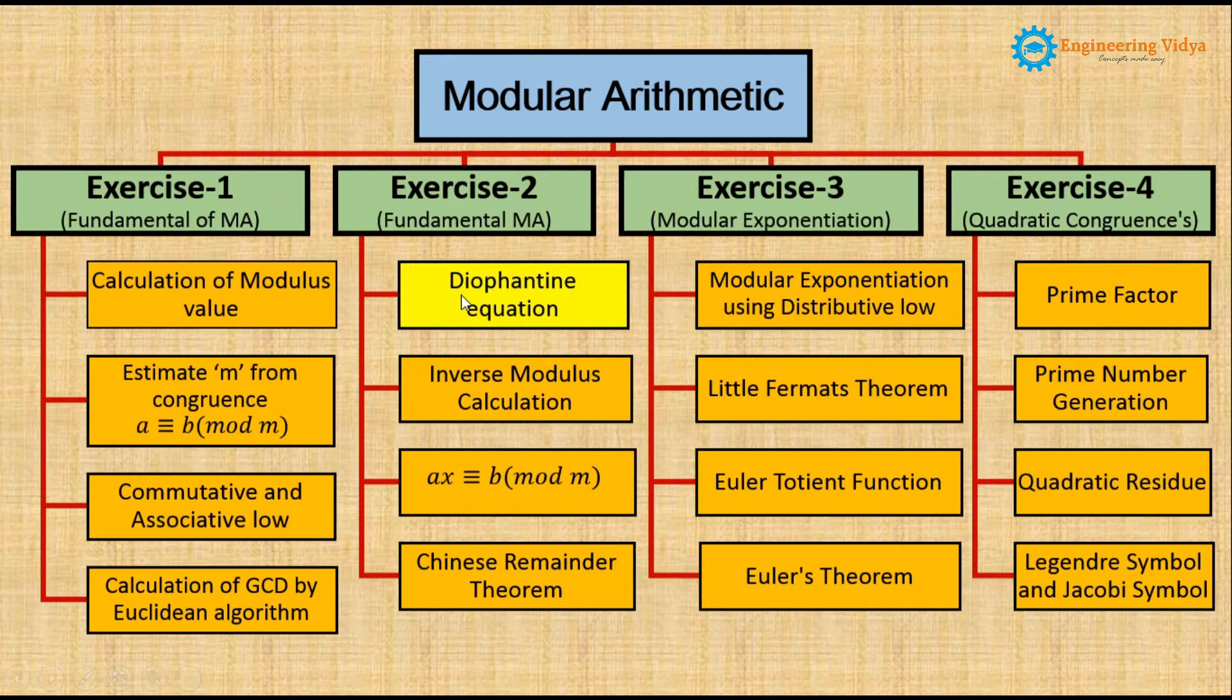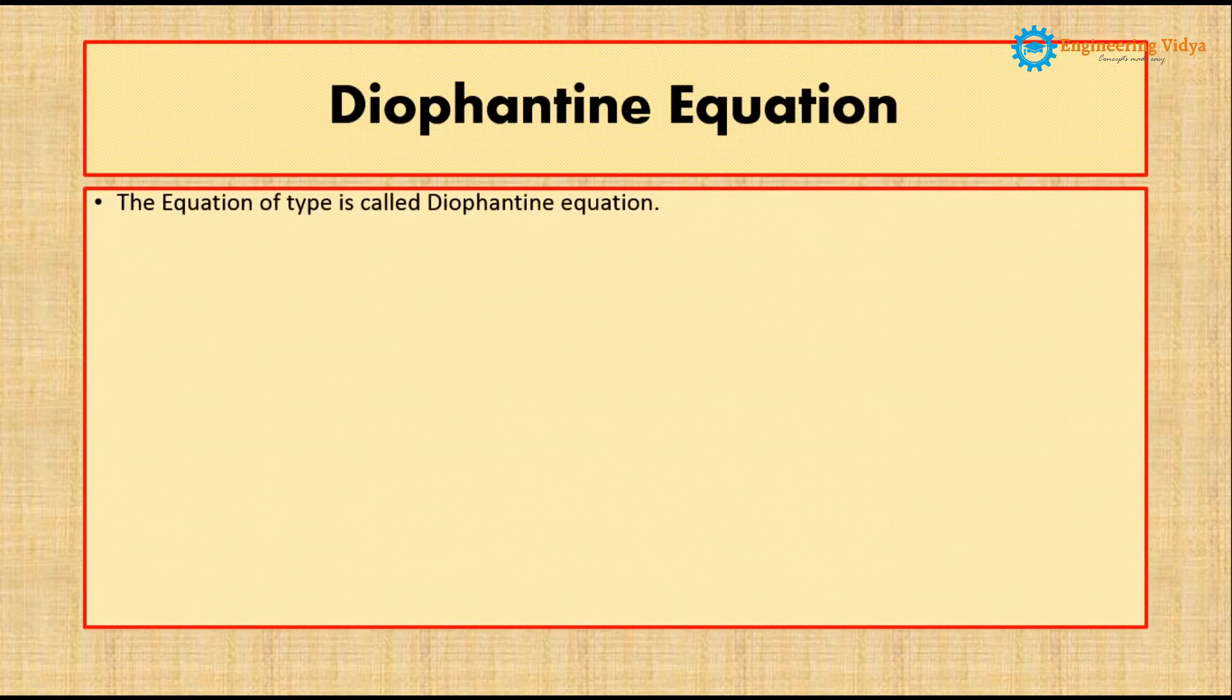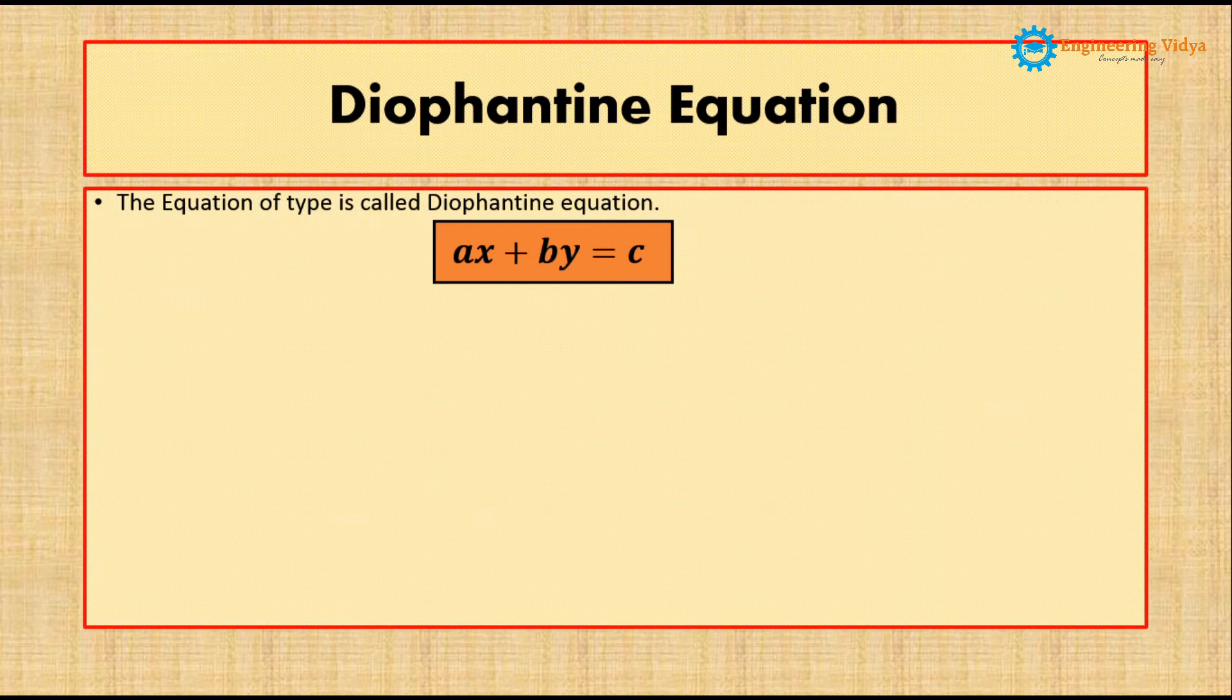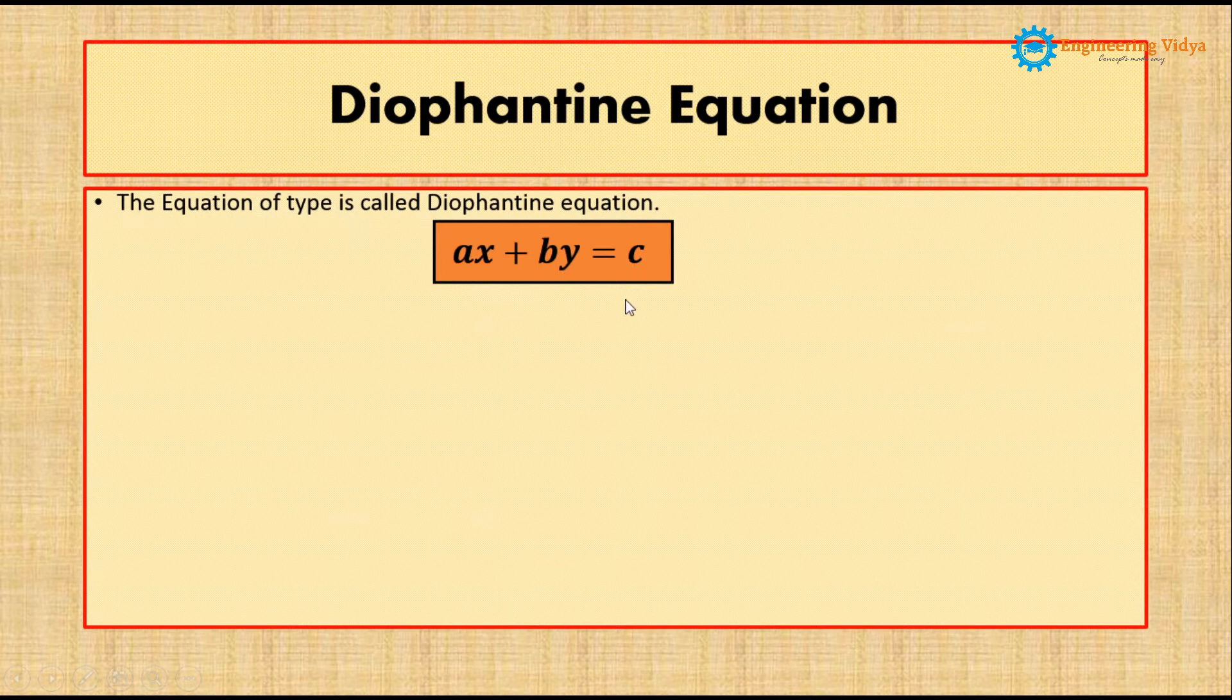We will start with the Diophantine equation. Before solving problems, we will see some introduction. The equation of the format ax + by = c is called a Diophantine equation, where a, b, and c are known constant integers.